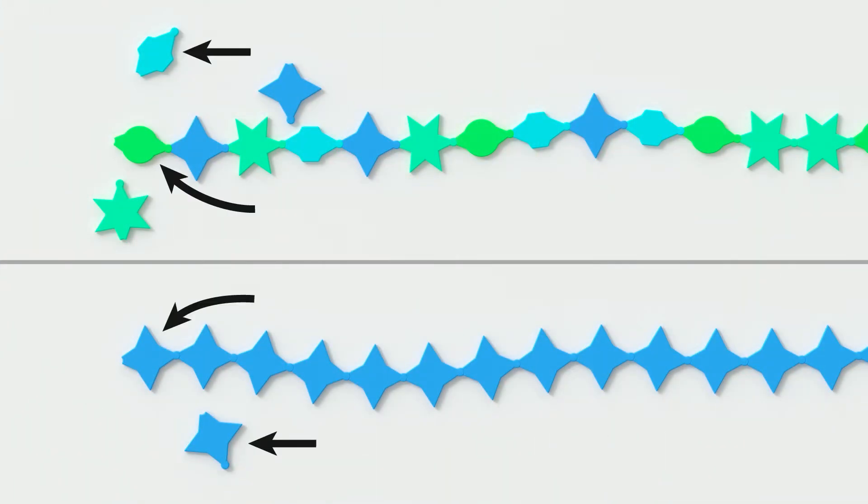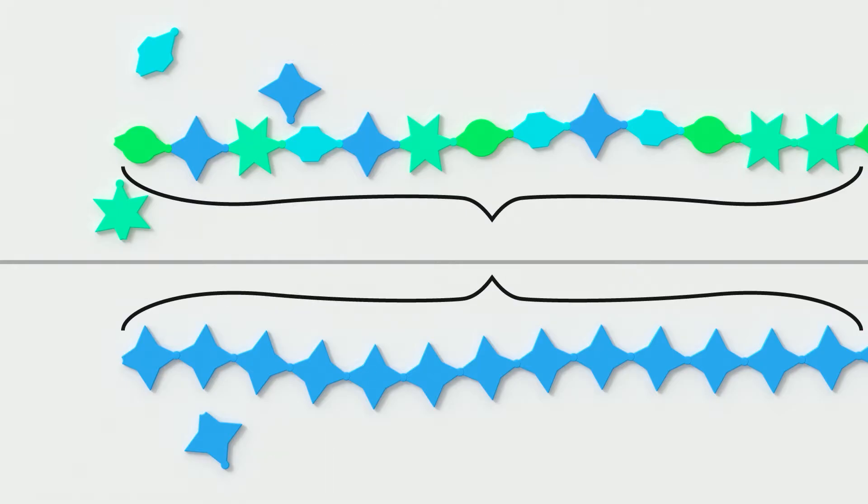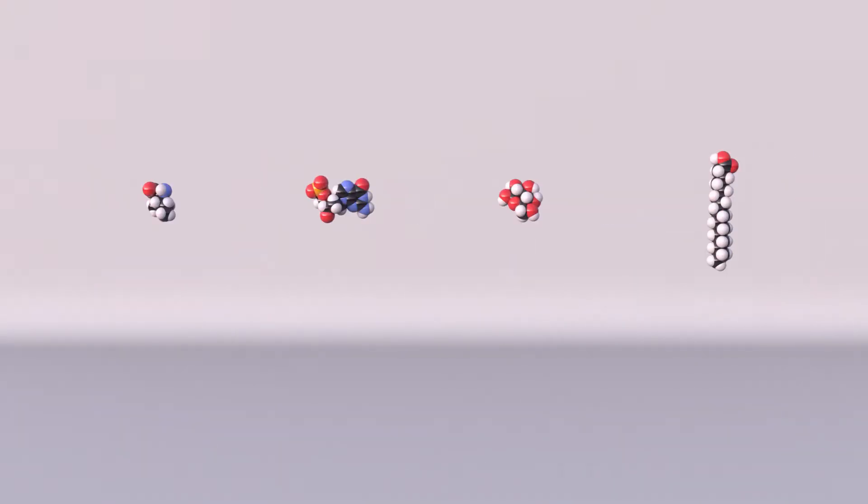These building blocks and chains have special names. The individual unit, regardless of what kind of small molecule it is, is called a monomer. Mono means one. The whole chain is called a polymer. Poly means many ones. Let's get back to real molecules, or illustrations of real molecules.